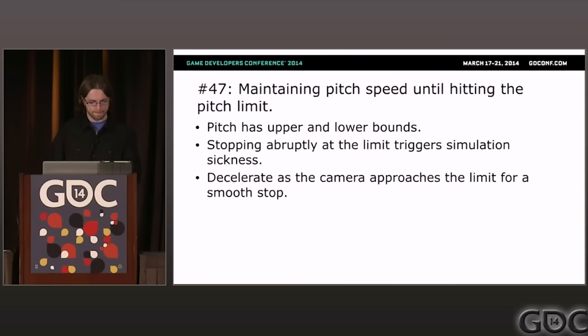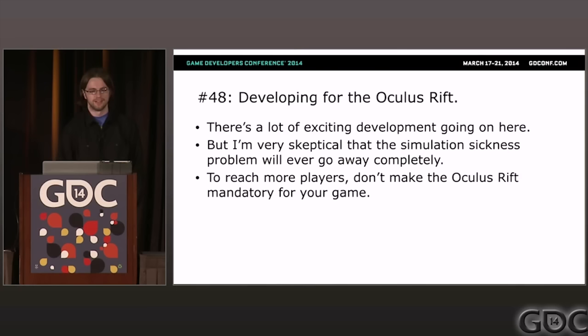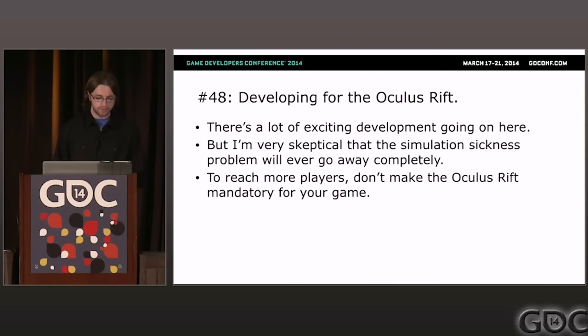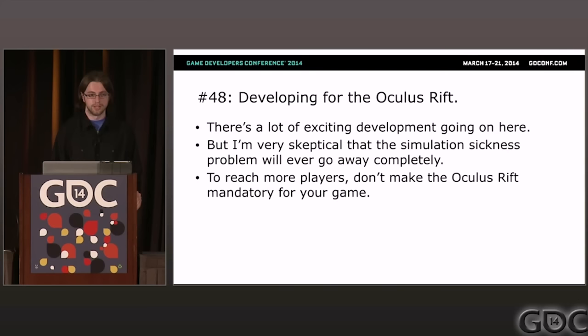Problem forty-eight: as games get more lifelike and better at simulating motion, they're also getting better at triggering simulation sickness, because simulation sickness happens when there's a mismatch between the motion you see and the motion you feel. I know the Oculus Rift developers are doing their best to improve it, but for the purposes of maximizing your audience and not excluding anybody, I urge everyone not to make games exclusively for the Oculus Rift. Make sure there's always some other way to play, because some people will probably never be able to use an Oculus Rift.